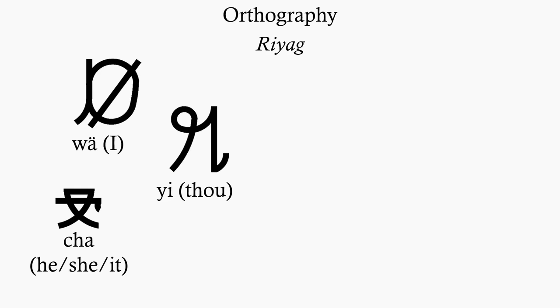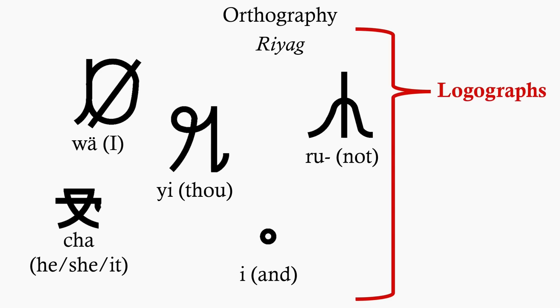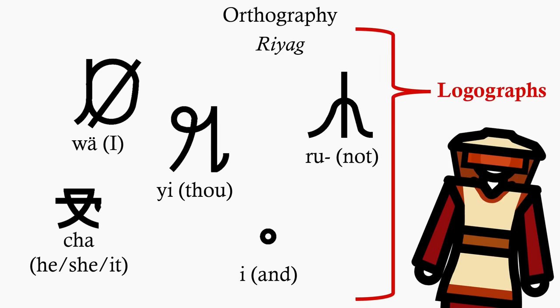Then there's the system of Riag, shortened script, where pronouns, grammatical particles and other commonly used words and morphemes have their own logographic characters, usually descended from the corresponding character in Micaiah.